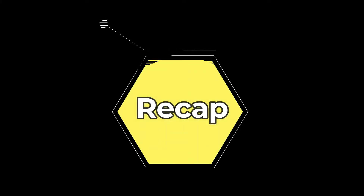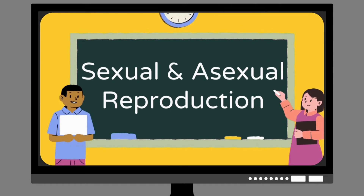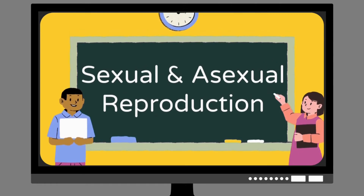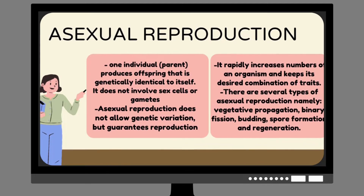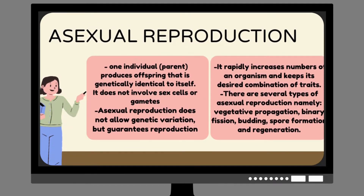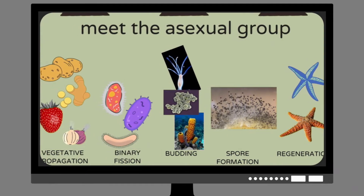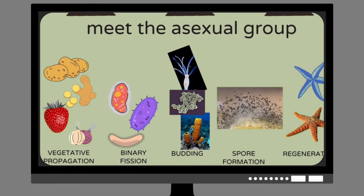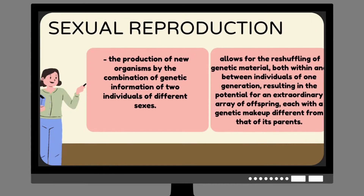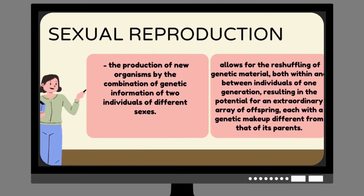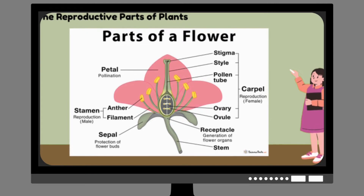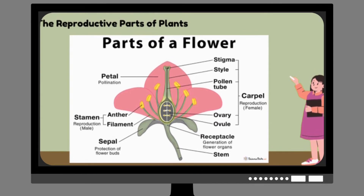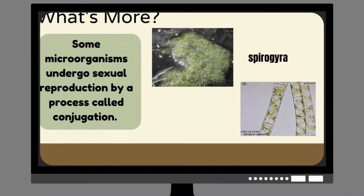Let us first have a short recap of our lesson last week. This was about sexual and asexual reproduction. Asexual reproduction has one individual or parent that produces offspring that is genetically identical to itself, while sexual reproduction is the production of new organisms by the combination of genetic information of two individuals of different sexes.